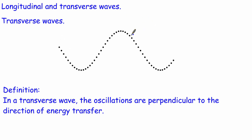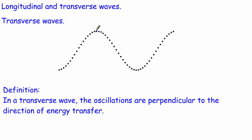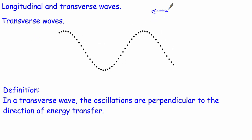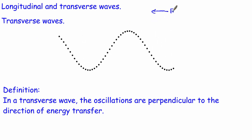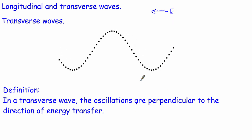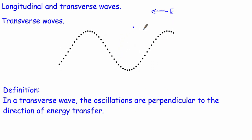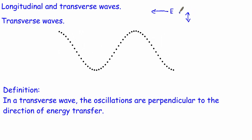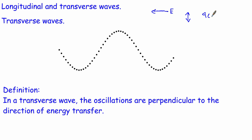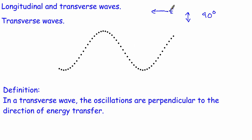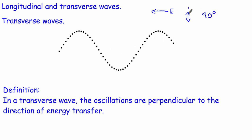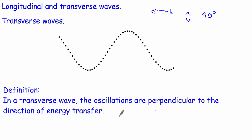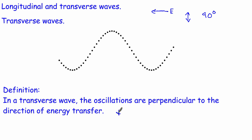What we mean by that is: for this particular wave, the wave is moving in one direction — that's the direction the energy is moving — but the oscillations, the actual movement of the particles, are at 90 degrees to that, because they're moving up and down. So the energy transfer and the oscillations are perpendicular to each other. This definition you have to know.